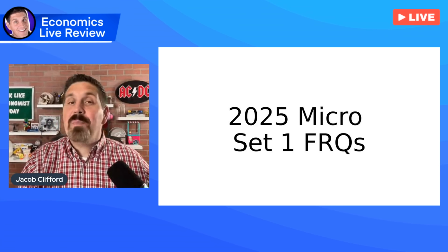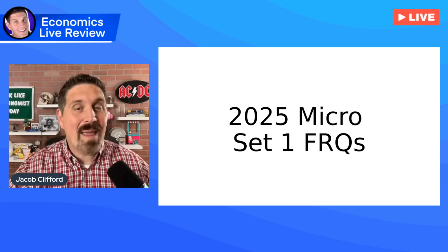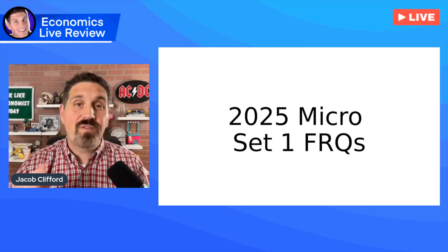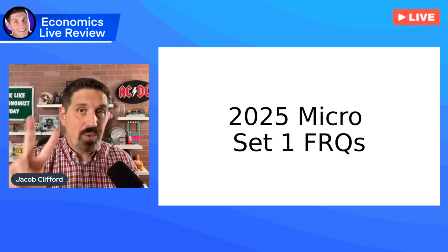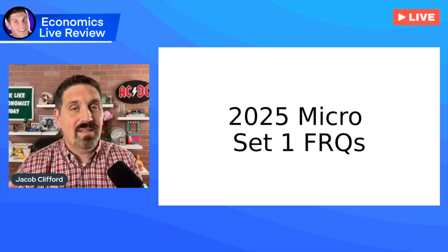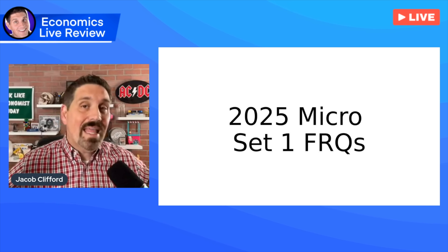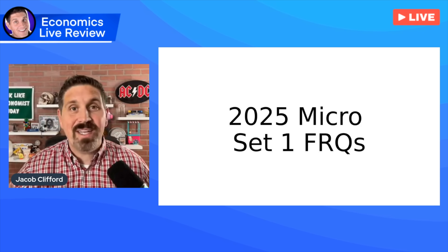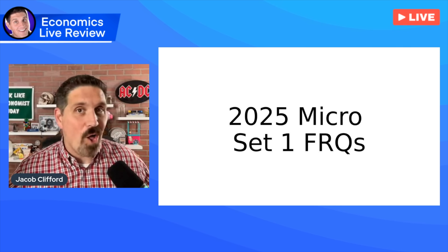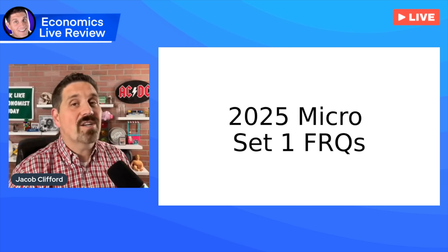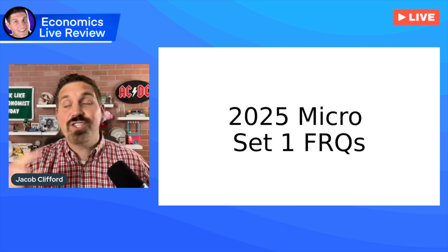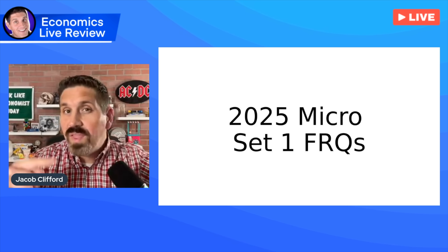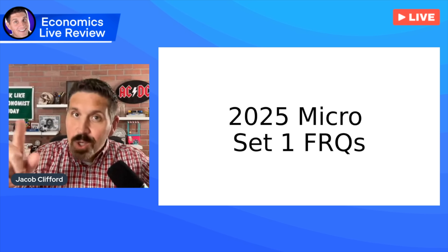Hey, micro students, this is Jacob Clifford. The AP exam was on Monday, and it's time to go over the free responses. I hope you did great. They did throw a few wrinkles in there, but if you came to my live review session two nights before the exam, I definitely covered those concepts. Before I begin, I do a contest with other teachers to see who had the best prediction, and it turns out we were all wrong. The teacher that was closest was Tammy Riggers out of Washington — the same one who won last year. In this video, I'm going to go over the answers so you can see how you did, so let's jump into it.